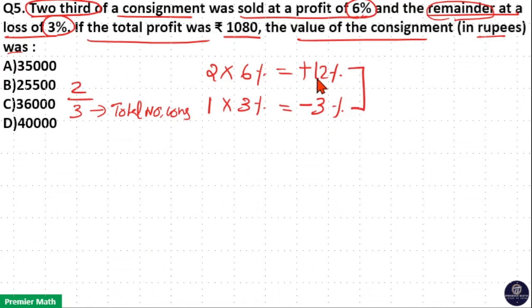Here, total profit is 12 minus 3. Total, 9% is profit.